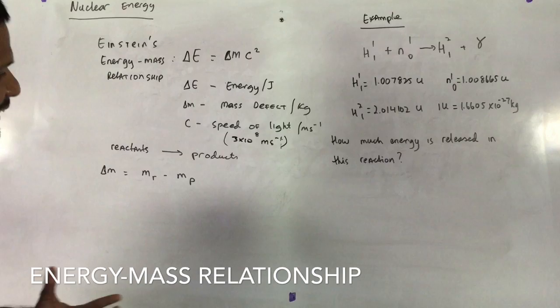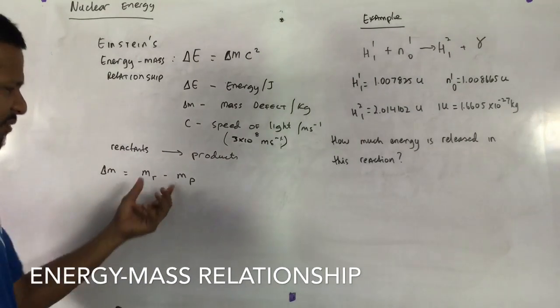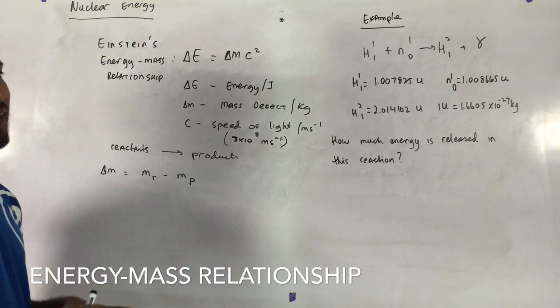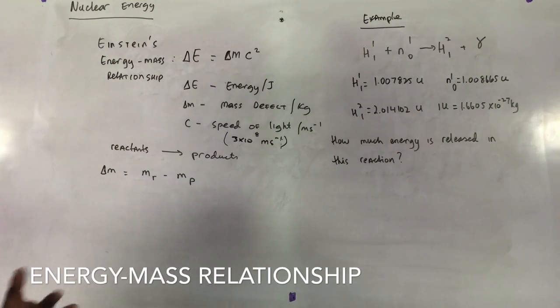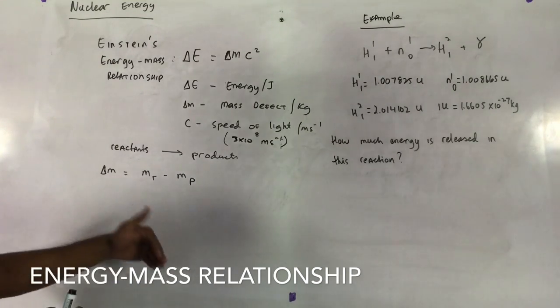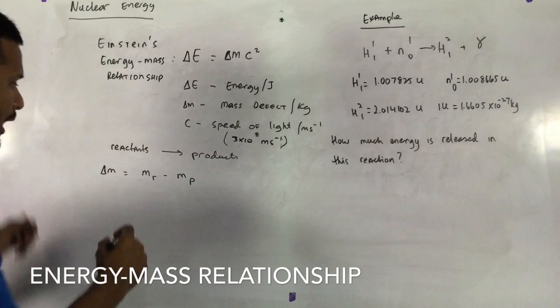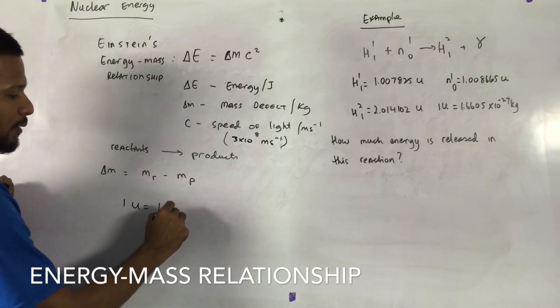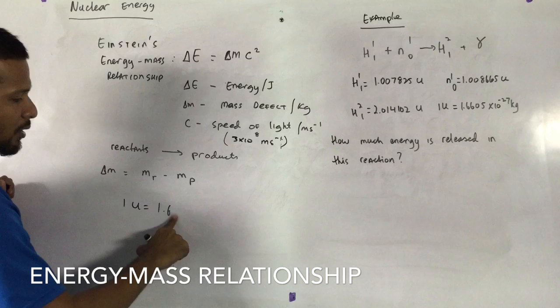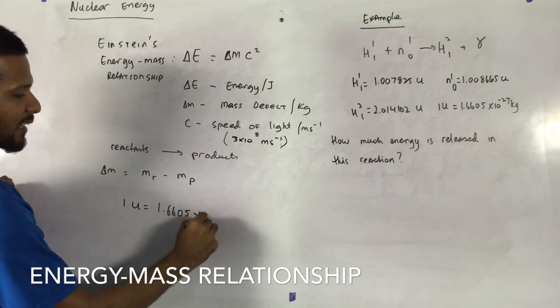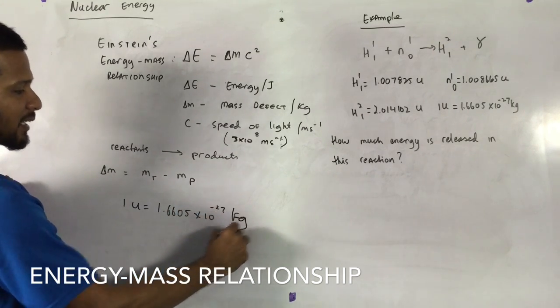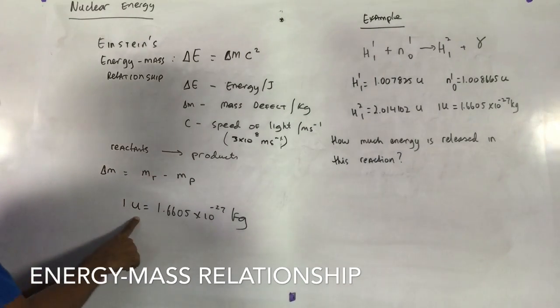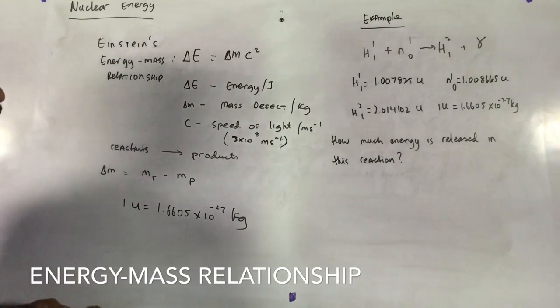But the problem with these calculations is that these calculations are very very small values. So the values of mass are like in the minus 27 digits. So what they do is they write something called the atomic mass unit, and the atomic mass unit which is 1u is equal to 1.6605 by 10 to the minus 27 kilograms. So because the values are very small they use a new unit called the atomic mass unit.